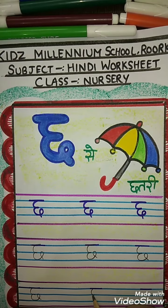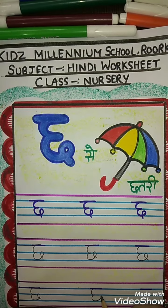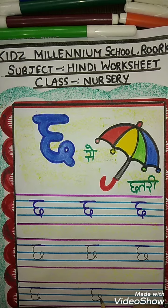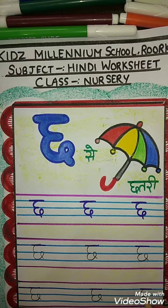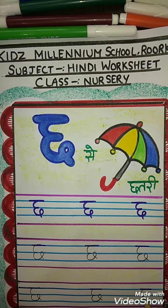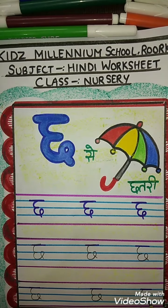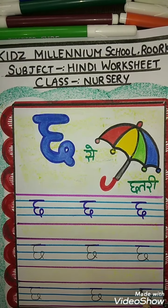Curve, joining with another curve. Bring it to the blue line, andar ki taraf, like this. Chh se Chhatri.